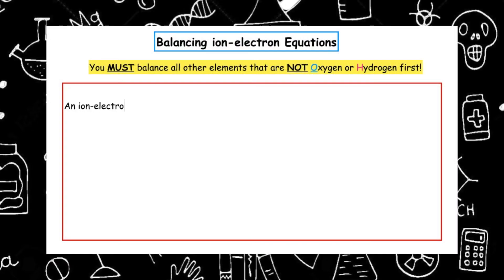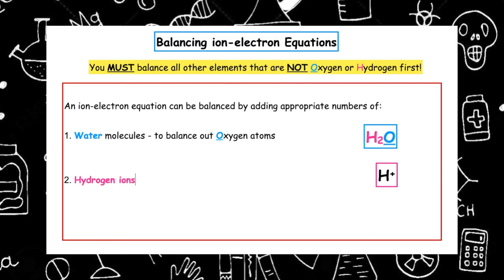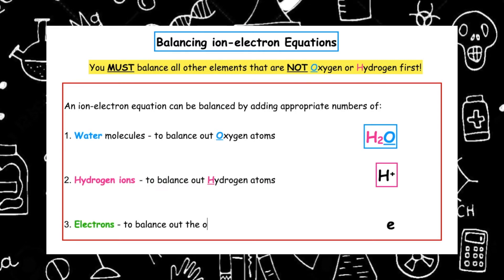An ion-electron equation can be balanced by adding the appropriate numbers of water molecules to balance out oxygen atoms, hydrogen ions to balance out hydrogen atoms, and electrons to balance out the overall charge. The trick is always to add the electrons to the side which has a higher overall charge.